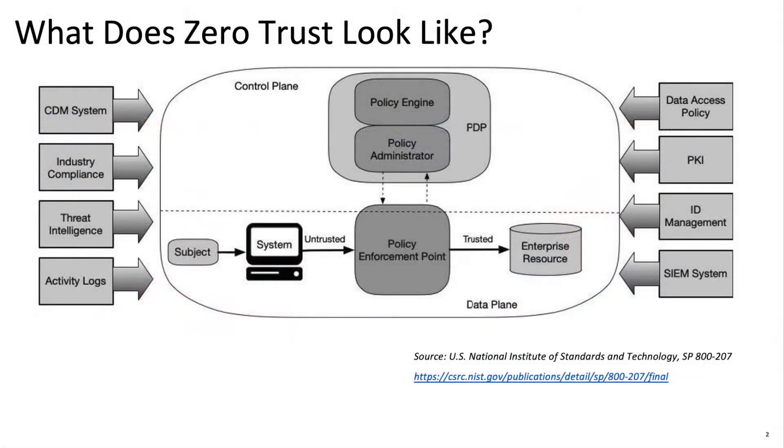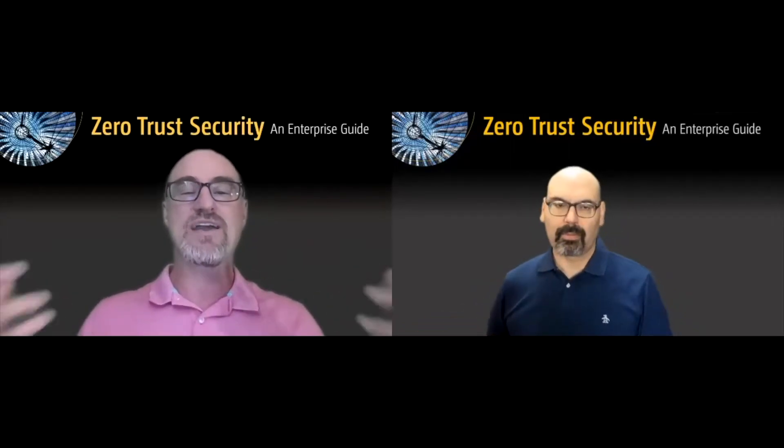Let's talk about the zero trust architecture from a higher level perspective. We like to reference the NIST 800-207 document. If you look at this diagram from that document, it introduces some of the concepts and the conceptual building blocks of zero trust. It does a great job of introducing the core concepts. In the middle you have the policy decision point, or PDP, bringing in external data to define what policy looks like — really driving how you structure your zero trust architecture and your policies.